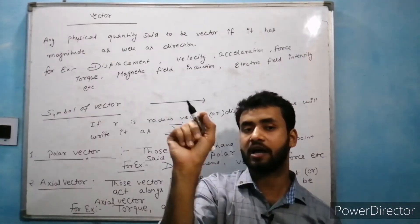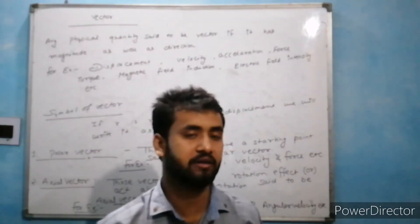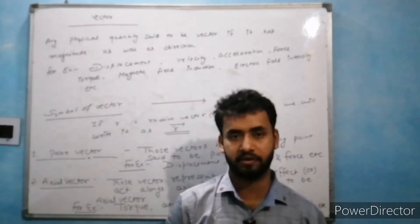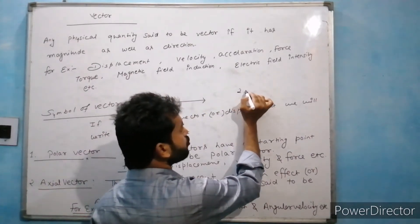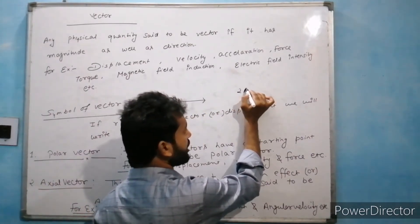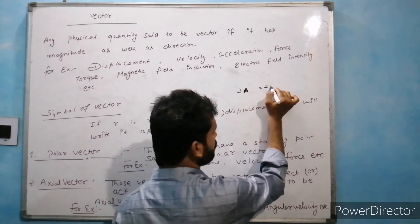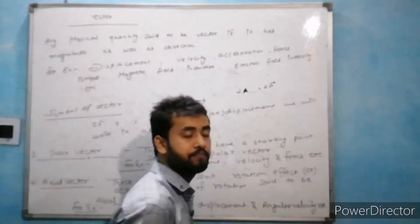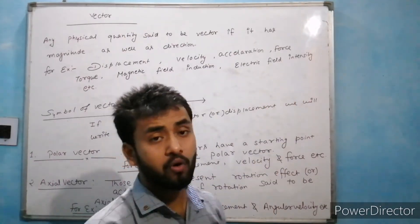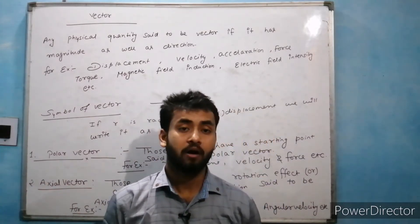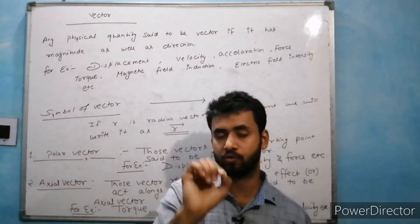When you see an arrow over a physical quantity, or you have a dark or bold letter, then this is a vector quantity. For example, if you see the letter 'a' written in a dark or bold way, that means it is a vector. If you can see an alphabet written in a bold way, then you will understand that a vector sign is being denoted.